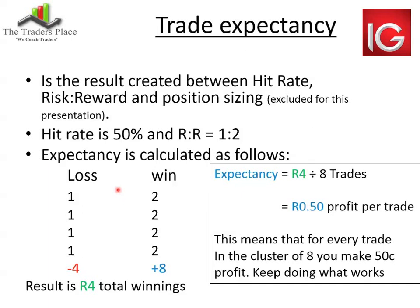Today what I've done is put together pretty much what I used on the CFD side, calculated based on CFDs for shares. I used something called trade expectancy. That gives me a really good feeling about everything I've done. It's basically the result created between your hit rate, your risk reward, and your position sizing. I've excluded position sizing for this presentation, as this was aimed more at the beginner to intermediate — when you include position sizing, that becomes really technical and advanced.